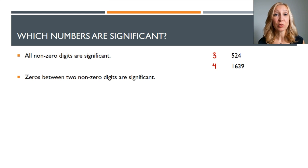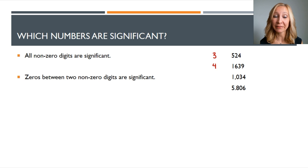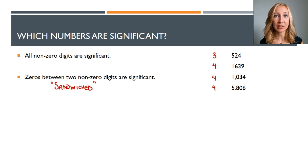The next set of rules deal with zeros. Rule number two: zeros between two non-zero digits are significant. So in 1,034, there's a zero between the 1 and the 3 — that's a significant digit. And in 5,806, there's a zero between the 8 and the 6 — that zero is also significant. These are sometimes called sandwiched zeros. So 1,034 has four significant figures, and 5,806 also has four significant figures.